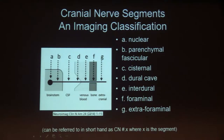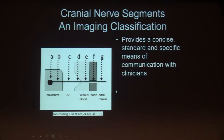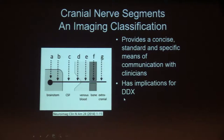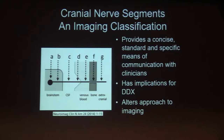We can refer to the cranial nerves in shorthand, specifically to the portion that we're talking about, by using this extension: cranial nerve, the number, and then the letter indicating the segment. This system of nomenclature provides us a concise and specific means of communication with clinicians, and it has some implications for differential diagnosis. Most importantly, it should alter our imaging approach to the different portions of the cranial nerve depending upon which segment we're talking about.